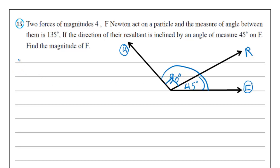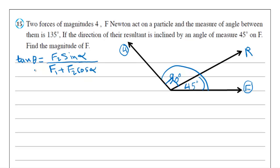Now we write the rule: tan θ equals F2 sine α over F1 plus F2 cosine α. We will substitute theta equals 90. If we consider theta equals 90, we consider F1 equals 4. If we consider theta equals 45, then we consider F1 equals F, because the measure of the angle between R and F is 45.